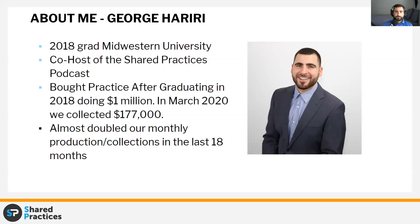After I graduated in 2018, a couple months later I bought a practice doing a little over a million dollars. COVID's timing was hard — I had just started getting momentum. We were on track in March — my first month breaking 200k, on track for 220 — and with COVID hitting mid-month we ended up at about 177k, which was still about double pre-ownership numbers. At this point, without COVID, we'd probably be about double the pace of when I bought it 18 months ago. It's been more than I could have ever expected.